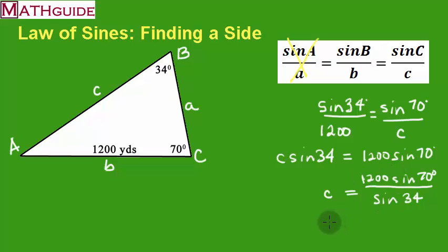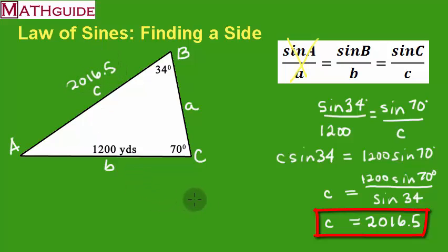So I'm going to punch that into a calculator. And once I punch that into a calculator, I get 2016.5. Approximately, and everything, of course, these distances are in yards. So I'm going to put that value right there.